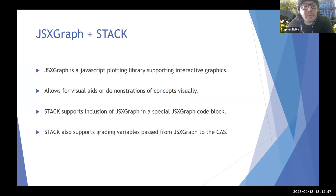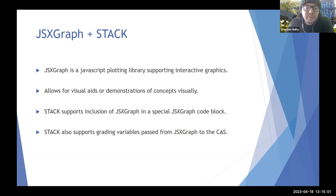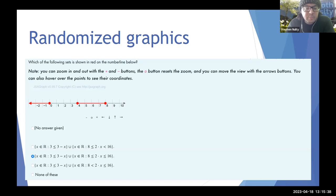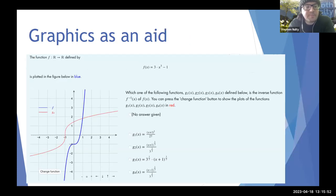More recently, we've been looking at adding JSX graph-based questions to our question bank. JSX graph is a JavaScript plotting library that supports interactive graphics — this can be useful either as a visual aid to help solve a question or to demonstrate concepts visually. STAC supports JSX graph with a special JSX graph code block you can include in the question text, and it also supports grading variables passed from JSX graph to STAC via the CAS. As a first example, students see a random number line showing an interval or multiple disjoint intervals, and are given multiple choice options to pick the correct one matching the interval shown.